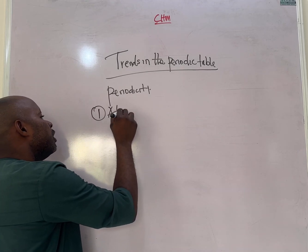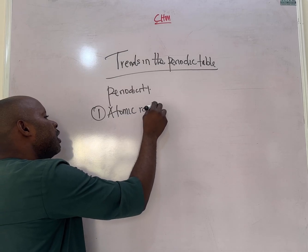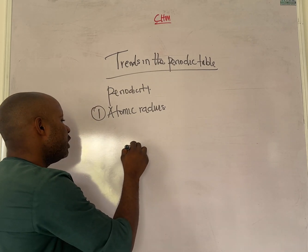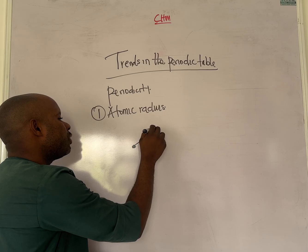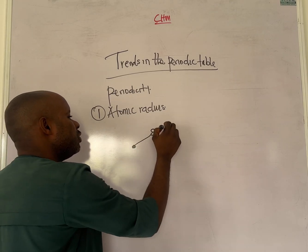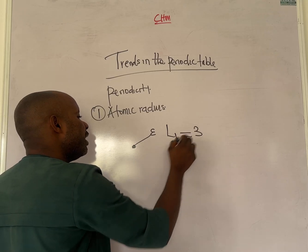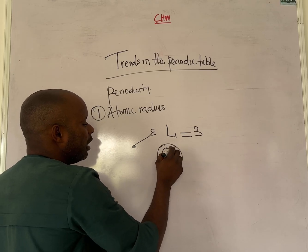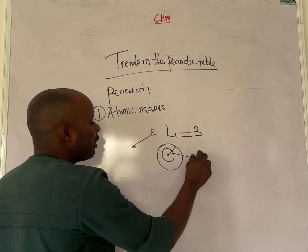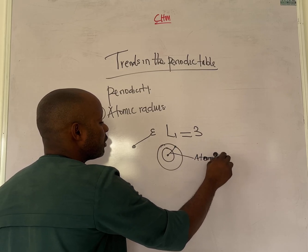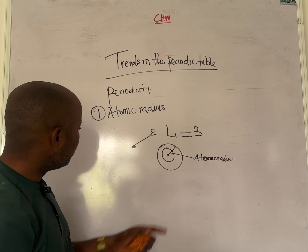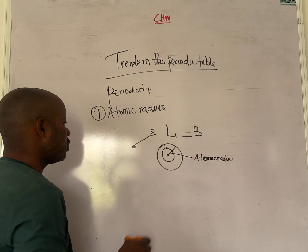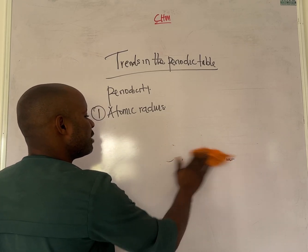One trend to discuss is atomic radius. Atomic radius is defined as the distance between the nucleus of the atom and the outermost valence electron. For example, lithium has two shells — the distance between the nucleus and the valence electron is known as the atomic radius.